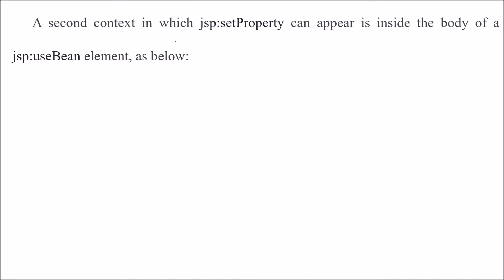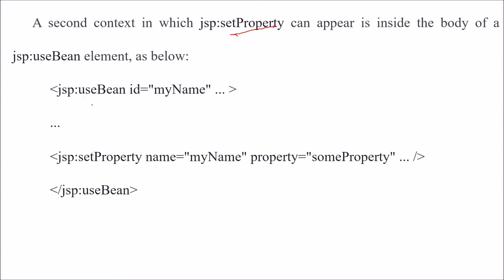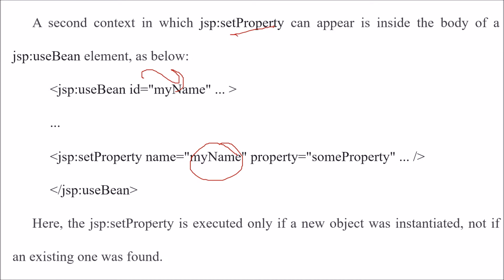The second context is where JSP setProperty appears inside the body of a JSP useBean element. In this case, the JSP setProperty is executed only if a new object was instantiated, not if an existing one was found.